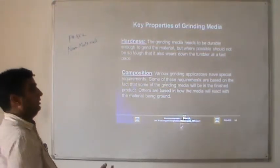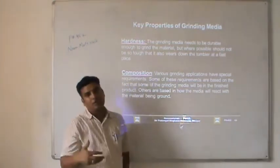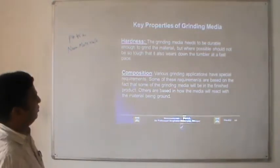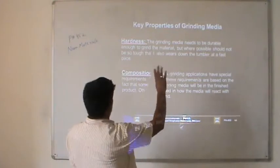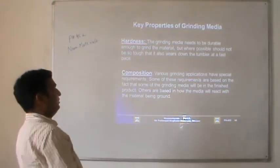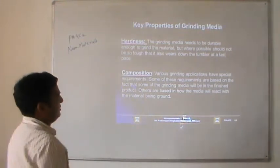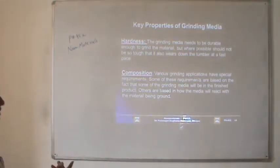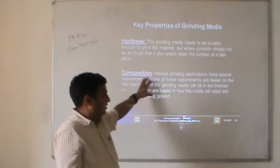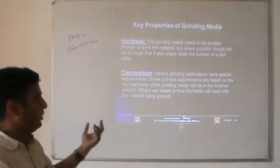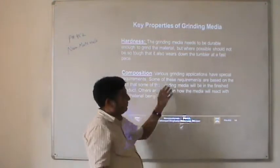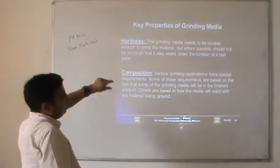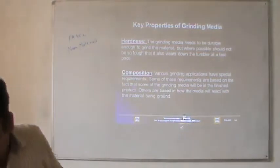Hardness: the balls of steel, tungsten, or carbide are very hard. The grinding media should be hard enough to grind the material but ideally should not wear down too fast. The last property is composition, which is most important. Various grinding applications have special requirements — some grinding media will be part of the finished product, others are based on how the media interacts with the material being ground. When preparing only nanosize samples of copper, iron, or gold, we are not interested in intermediate stages, but for alloys, composition as well as size both matter.